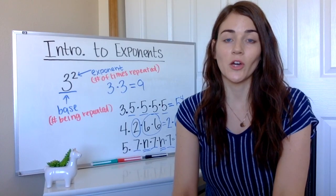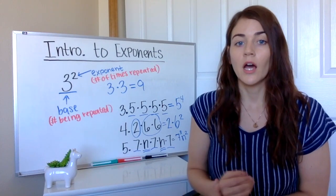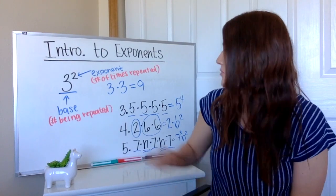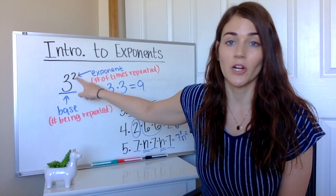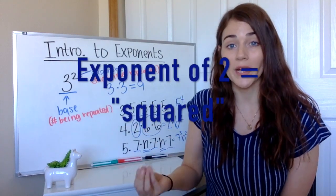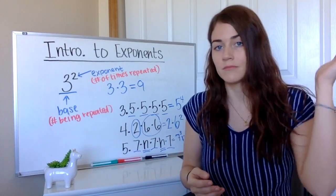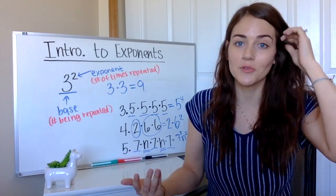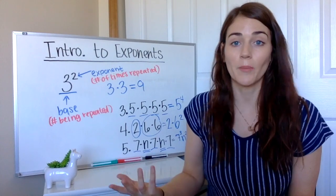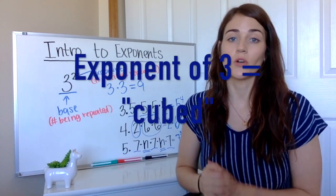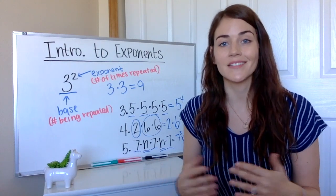I want to briefly touch on how you actually say these things, because there are lots of different ways you might hear it. You might hear 'three to the power of two' or 'three to the second power.' Anything raised to the second — any exponent of two — is also known as 'squared,' because if you have a square with sides of five feet by five feet, five times five is 25, and five squared is 25. If the exponent is three, you can say 'to the power of three,' 'to the third power,' or 'cubed.' Anything after that is just 'to the fourth power,' 'fifth power,' 'to the power of six,' and so on.